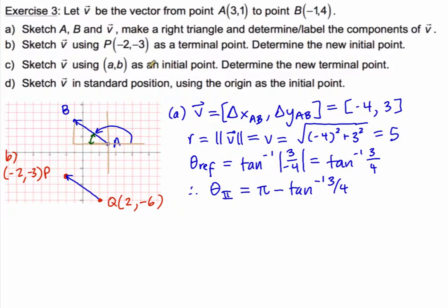Part C, I want to sketch vector v using a variable point a comma b as the initial point. To come up with the new terminal point I know that I have certain change and the change that I have is 4 spaces to the left and 3 spaces up so if my initial point is a comma b to get the final x-coordinate we subtract 4 and from the initial y-coordinate we add 3. And then in Part D we want to sketch vector v in standard position so we're going to start the vector at the origin and placing that vector with an initial point at the origin tells me that I have the same terminal coordinates as the actual components of the vector themselves so the terminal point is going to be negative 4 comma 3.